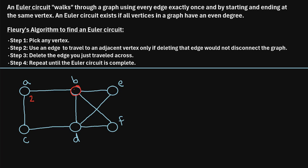Moving on to vertex B, there are one, two, three, four edges connected to vertex B, so vertex B has a degree of four. Similarly, vertex C has two edges connected to it, so it has a degree of two. For vertex D, there are one, two, three, four edges connected to it, so it has a degree of four. For vertex E, it has two edges connected to it, so a degree of two. And for vertex F, there are two edges connected to it, so it has a degree of two.